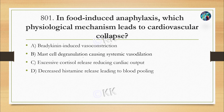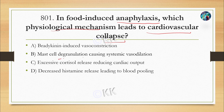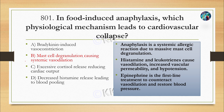In food-induced anaphylaxis, which physiological mechanisms lead to cardiovascular collapse? Option A: bradykinin-induced vasoconstriction. Option B: mast cell degranulation causing systemic vasodilation. Option C: excessive cortisol release reducing cardiac output. Option D: decreased histamine release leading to blood pooling. The correct option is Option B — mast cell degranulation causing systemic vasodilation.